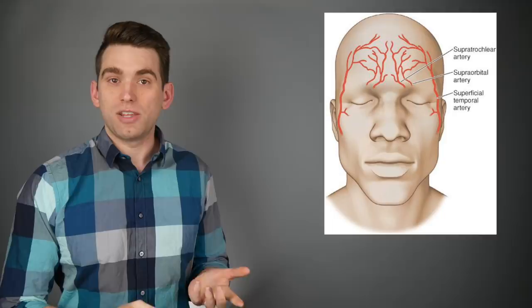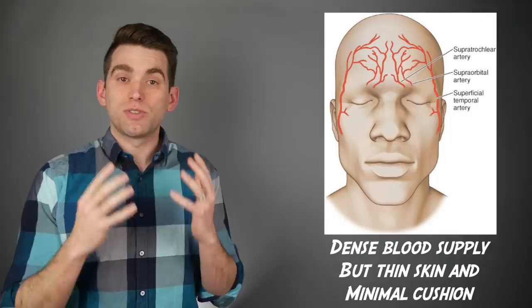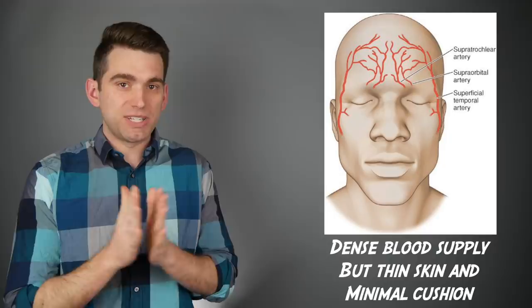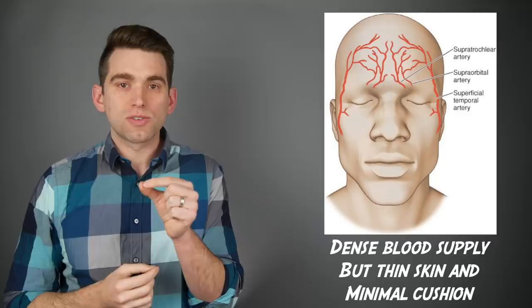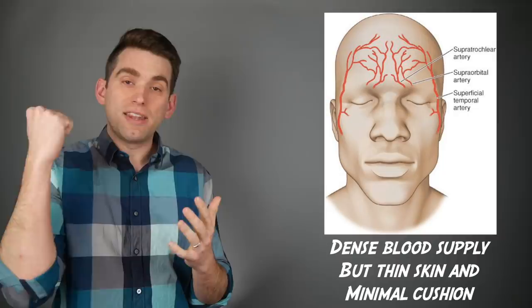We have this dense population of blood vessels that surround the face and the forehead, but you have super thin skin on your forehead. And so there's not much protecting those blood vessels. What happens when you take these types of punches to the forehead is those blood vessels get pinched and smashed between the solid background of the forehead with the skull and the fighter's fist that's making contact.